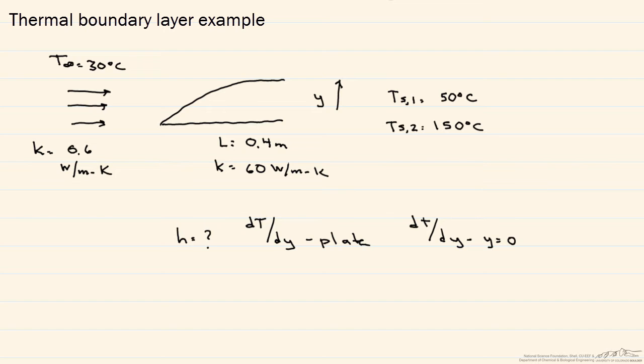Here we'll look at a thermal boundary layer that forms on a flat plate and determine not only that convective heat transfer coefficient, but also the temperature gradient through the plate itself and at the surface.